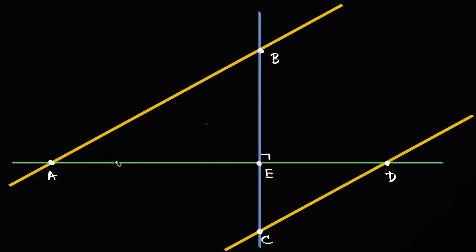First of all, we know that angle CED is going to be congruent to angle ABE, because they're both right angles — so that's a right angle and that is a right angle. We also know some things about corresponding angles for a transversal where it intersects parallel lines. If we look at the blue transversal as it intersects those two lines, the corresponding angles are going to have the same measure — they're going to be congruent.